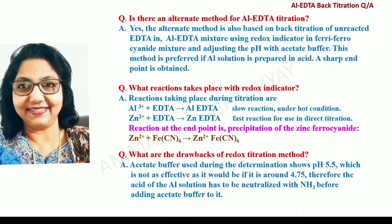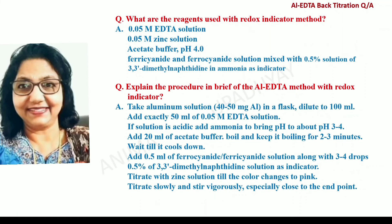What are the drawbacks of the Redox titration method? The acetate buffer used during the determination gives pH 5.5, which is not as effective as it should be at around pH 4.75. Therefore, the acid in the Aluminium solution has to be neutralized with ammonia before adding the acetate buffer. What are the reagents used with the redox indicator method? The reagents are: 0.05 molar EDTA solution, 0.05 molar zinc solution, acetate buffer to adjust pH to around 4, and a ferrocyanide-ferricyanide solution mixed with 0.5% solution of 3,3-dimethyl naphthidine in ammonia as the indicator.